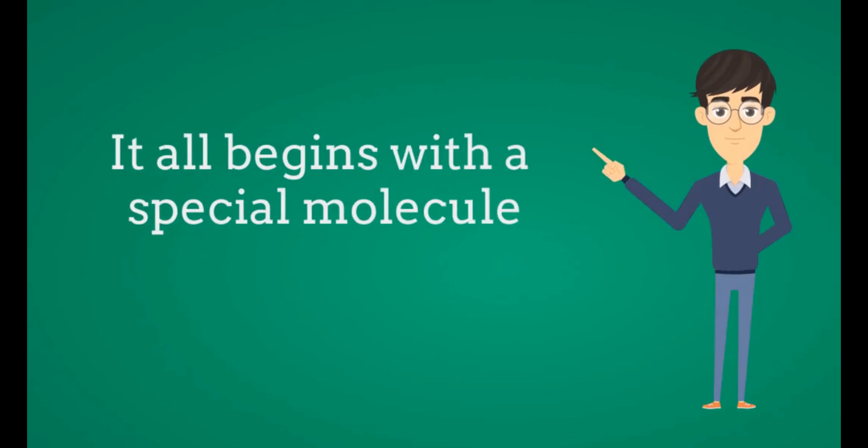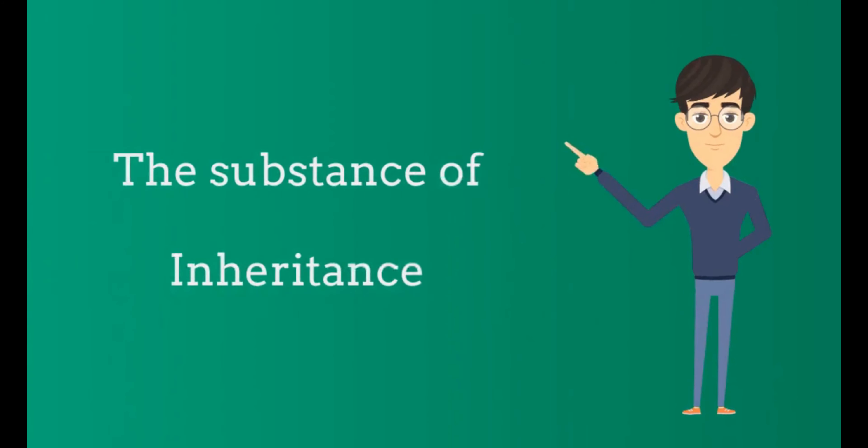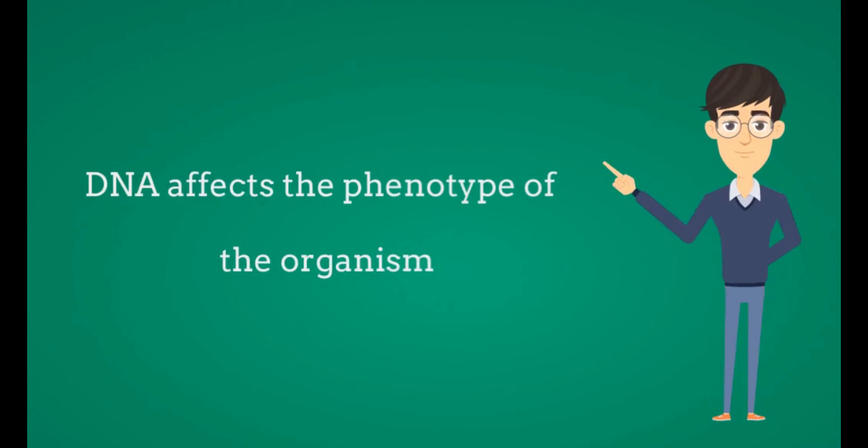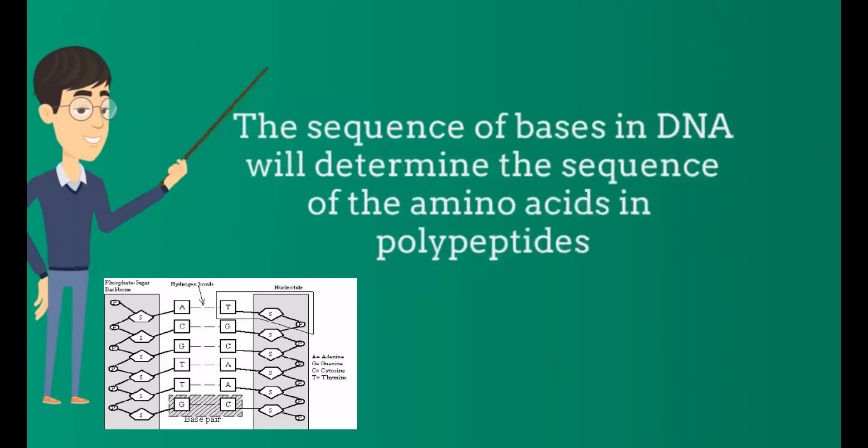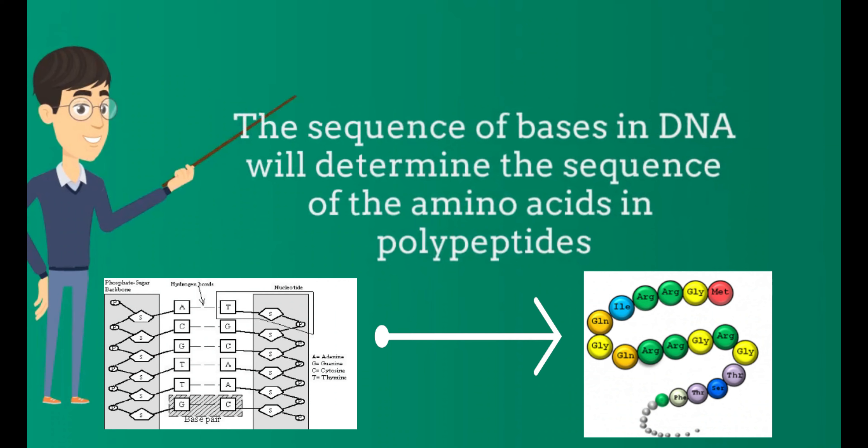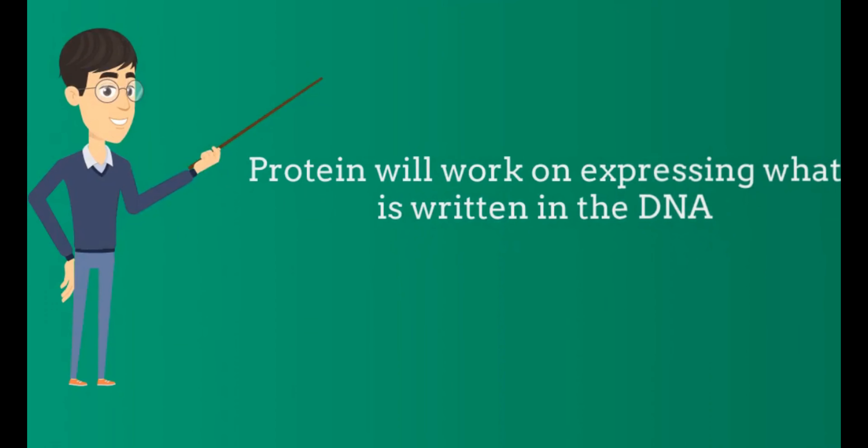It all begins with a special molecule, DNA, the substance of inheritance. DNA affects the phenotype of the organism. The sequence of bases in DNA will determine the sequence of amino acids in polypeptides, leading to the formation of a functional protein. The protein will work on expressing what is written in the DNA.